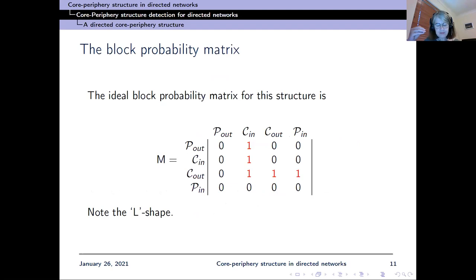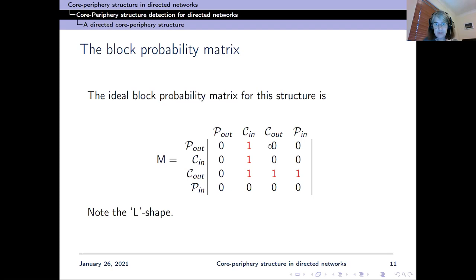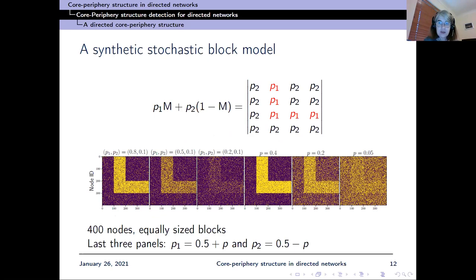As done in the block modeling literature, we think of a block probability matrix linking the four blocks: P-out, C-in, C-out, and P-in. Ideally, C-in receives information from P-out, C-out, and from C-in itself—giving a column of ones. C-out gives information to C-in, to itself, and also to P-in, but not to P-out. All other entries are zero. This gives an L-shaped structure, with ones in the red-marked positions and zeros elsewhere.